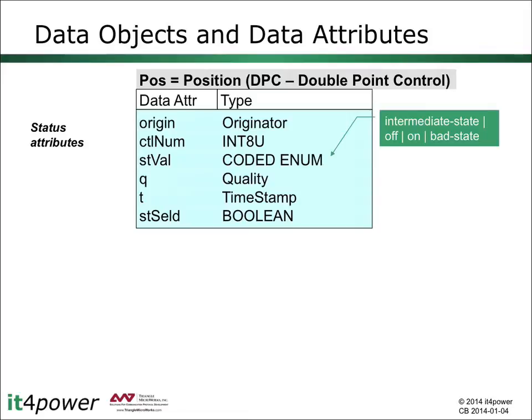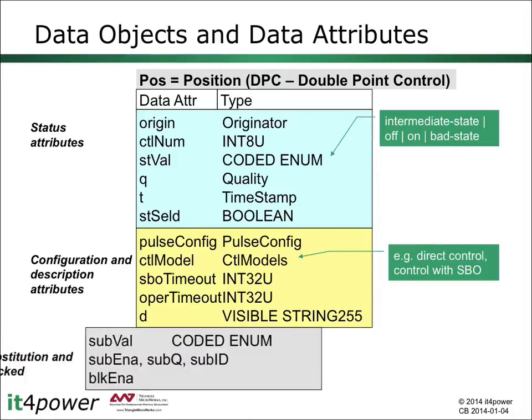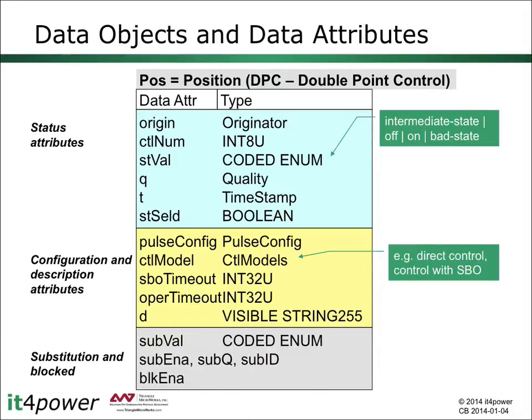With the IEC 61850 data model, we also attach non-operational information — for example, configuration information — to the same data object. Here we have a few examples, like the possibility to describe the control behavior of the switch or the operate timeout. Further, we may have information related to substitution, which will be described later. Also later, we will discuss controls in IEC 61850 in general and how control parameters, like the command to open or close the switch, are modeled.